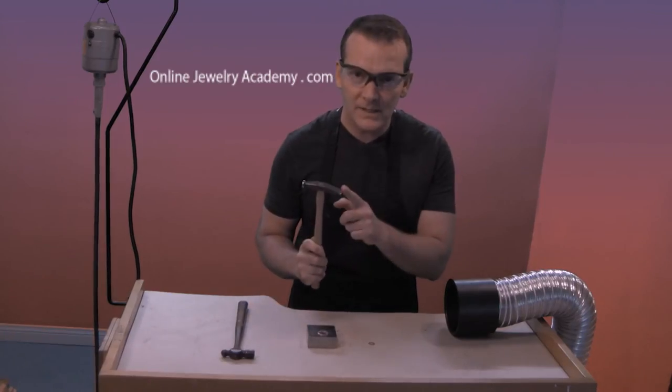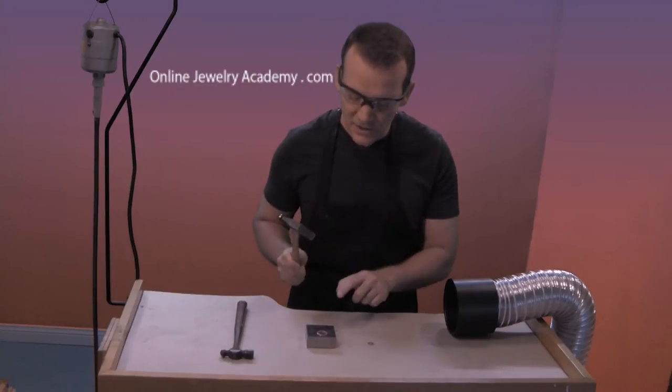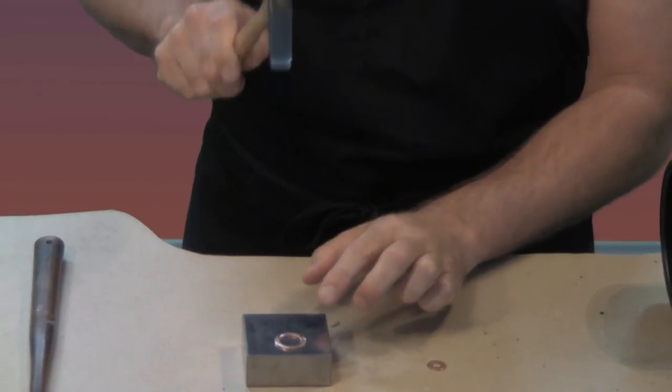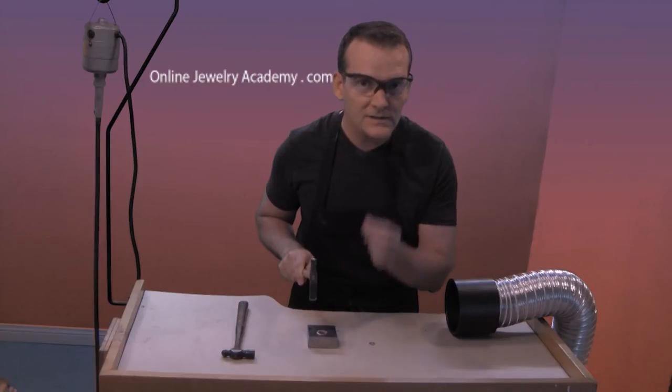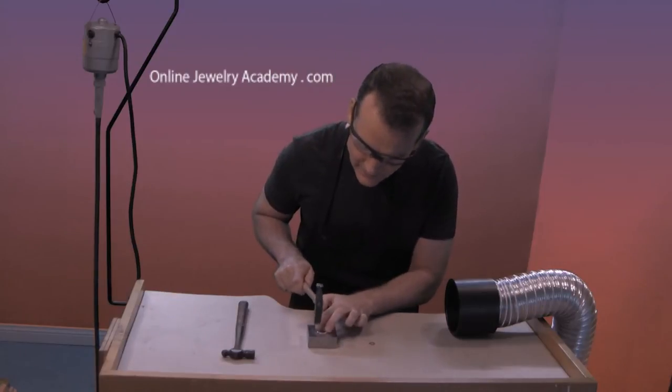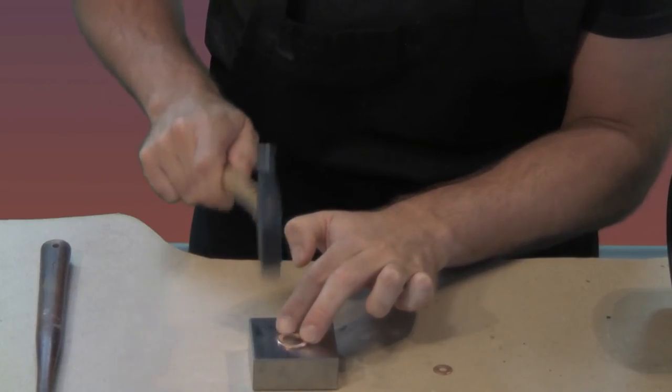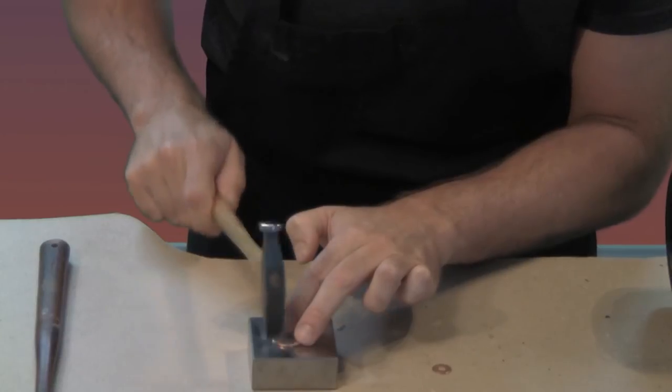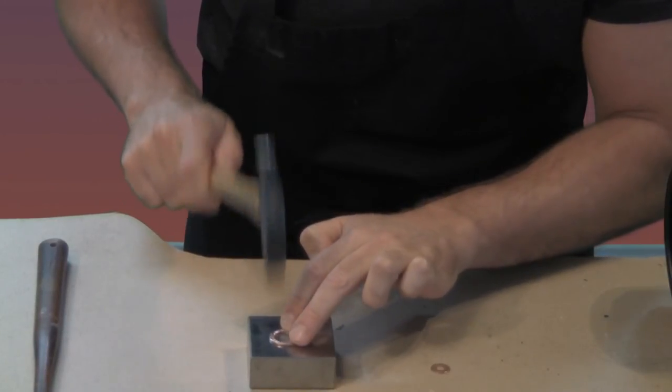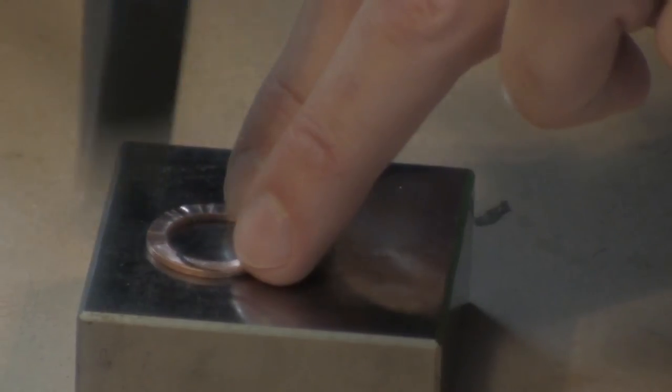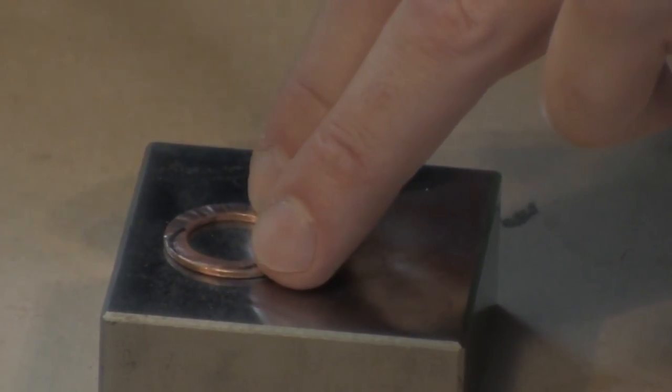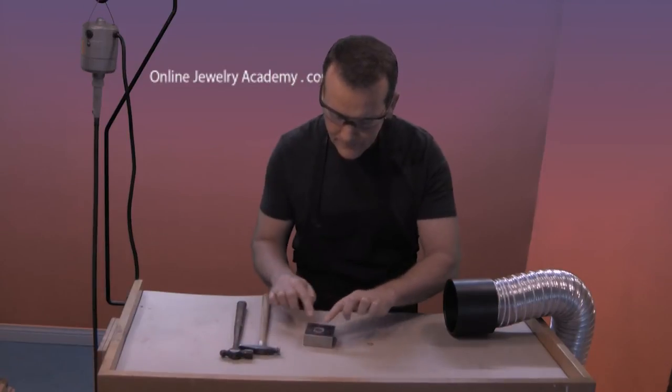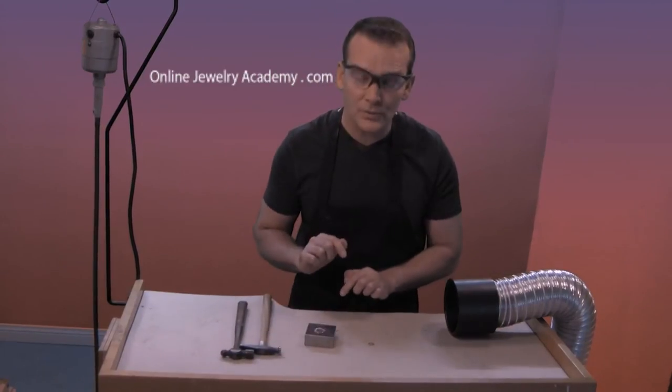So I'm going to take the smaller washer off, pick up the cross-peen hammer with its flat edge, and I'm going to strike in one place like a machine and rotate the large disc to create the same radial effect that I have on my earrings.